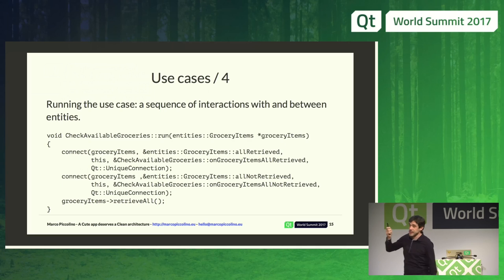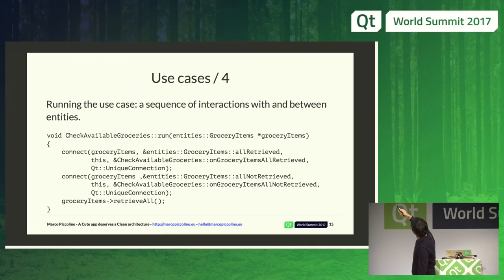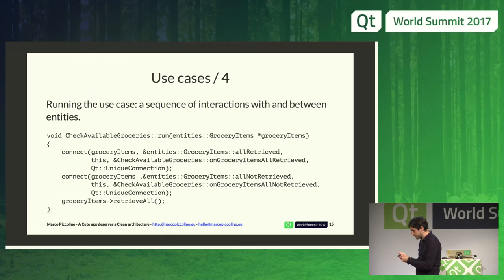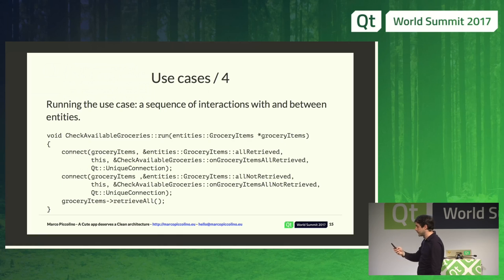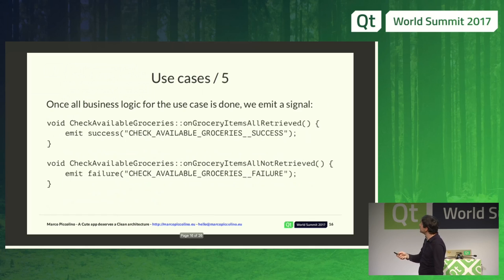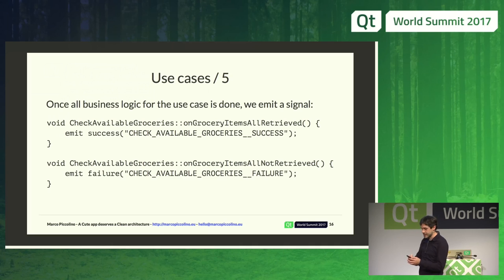Here is the implementation of my use case: I have a run method and I connect certain things that happen after this run to a success or failure signal. In my run method I go to my grocery items entity and say 'retrieve all the data that you can.' When this is done, I do something else — either emit a success or failure message. I could do other things before emitting, but here I only have one action.